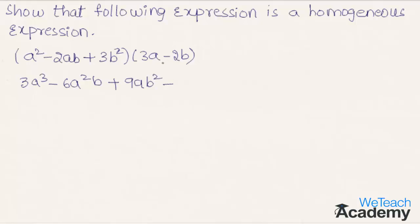Now let us multiply the expression with minus 2b. We get minus 2b into a squared as minus 2a squared b. Multiplying minus 2b with minus 2ab gives plus 4ab squared, and multiplying minus 2b with 3b squared gives minus 6b cubed. Now by grouping the like terms we can write this expression.